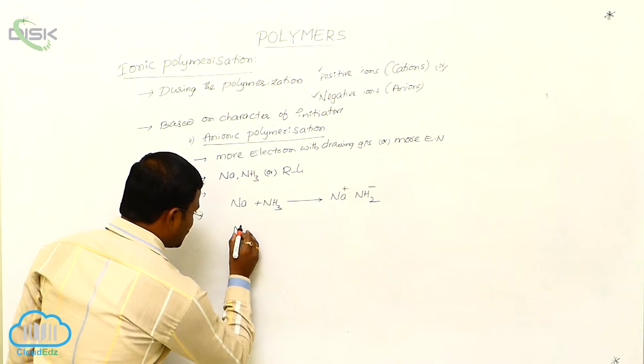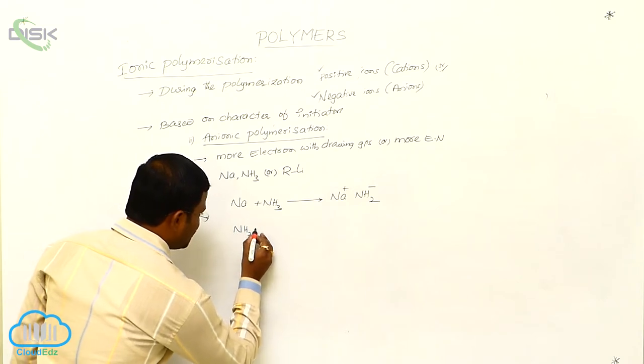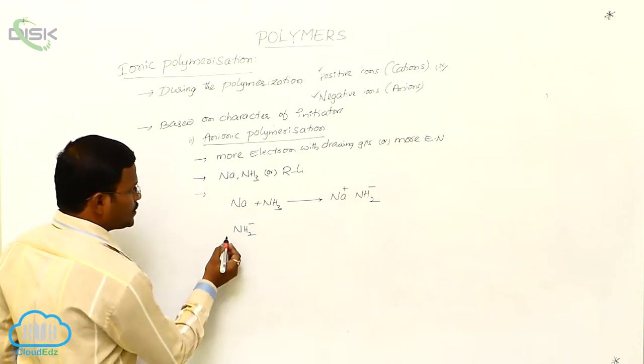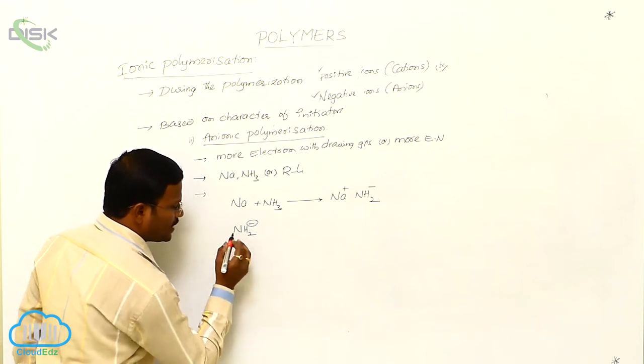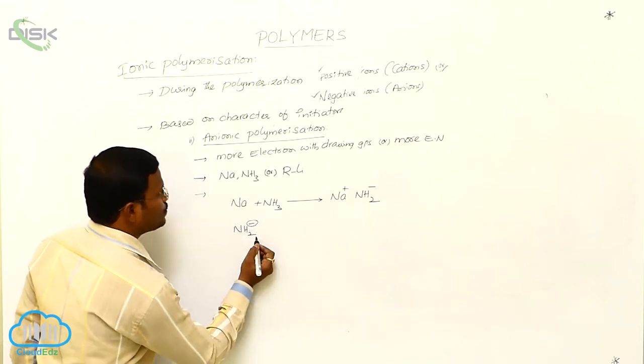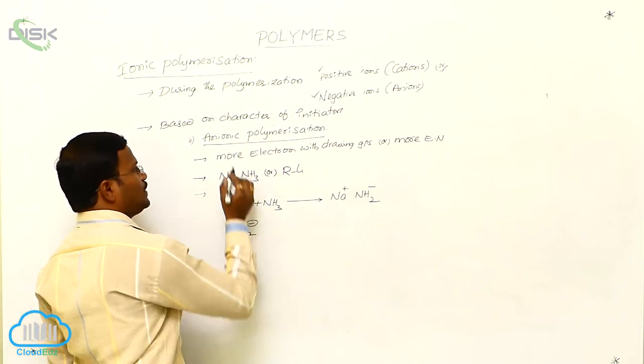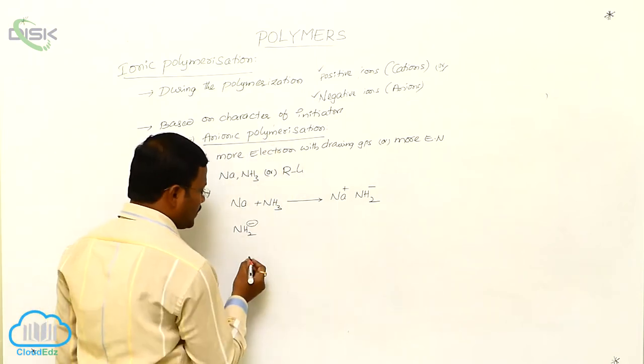Now the formed NH2 minus in the initiation step. So what is the species produced or used in the initiation step? Negative species, hence it is called anionic polymerization.